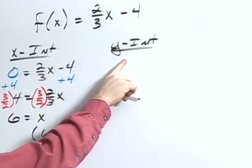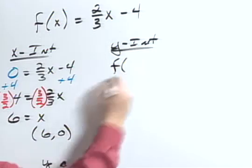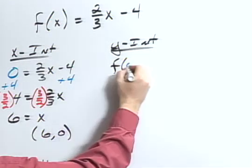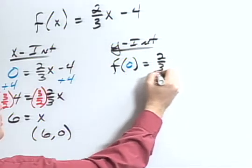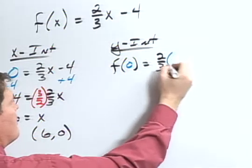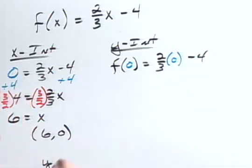For my y-intercept, let x equal zero. So f of zero will equal two-thirds times zero instead of the x minus four.